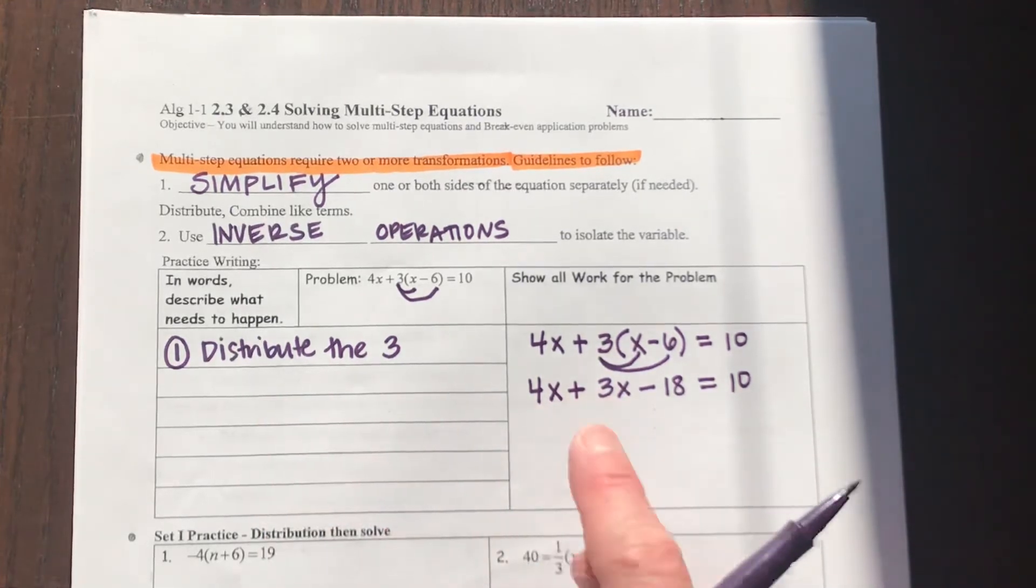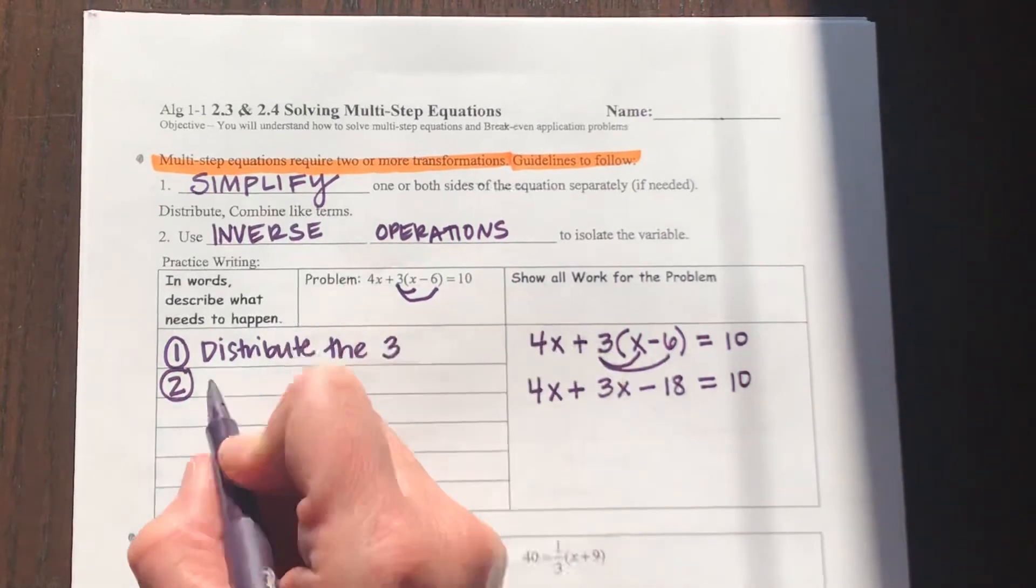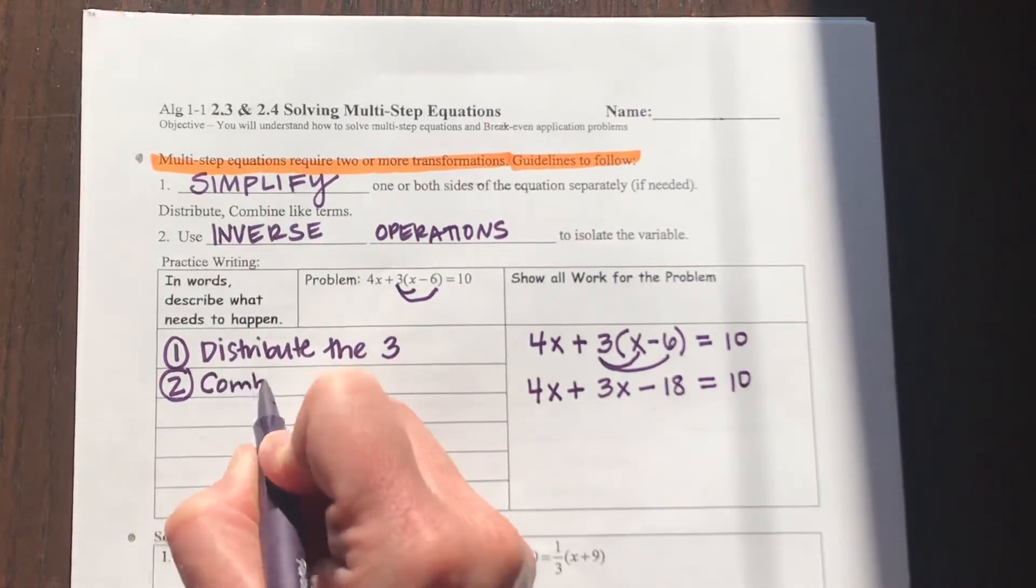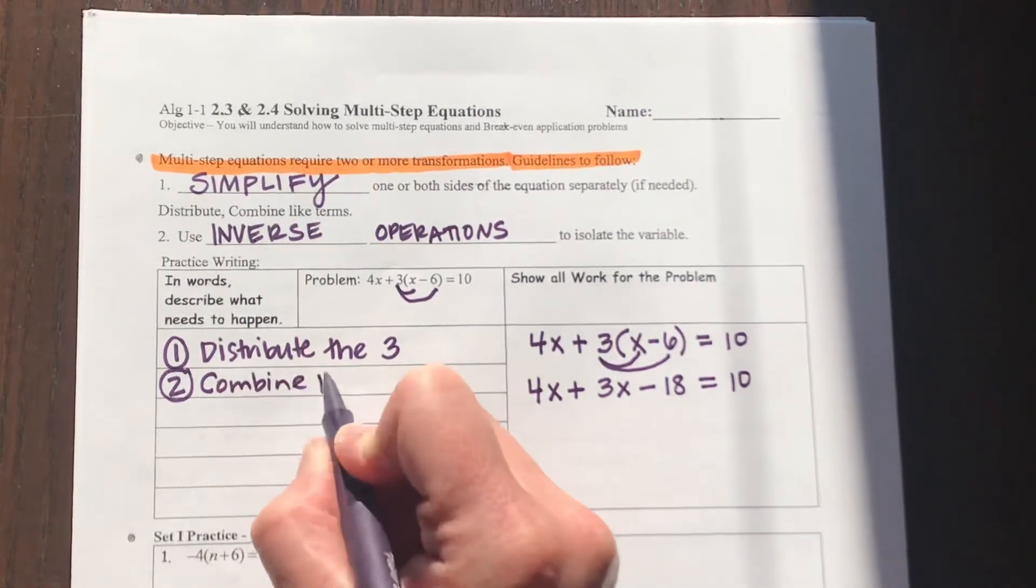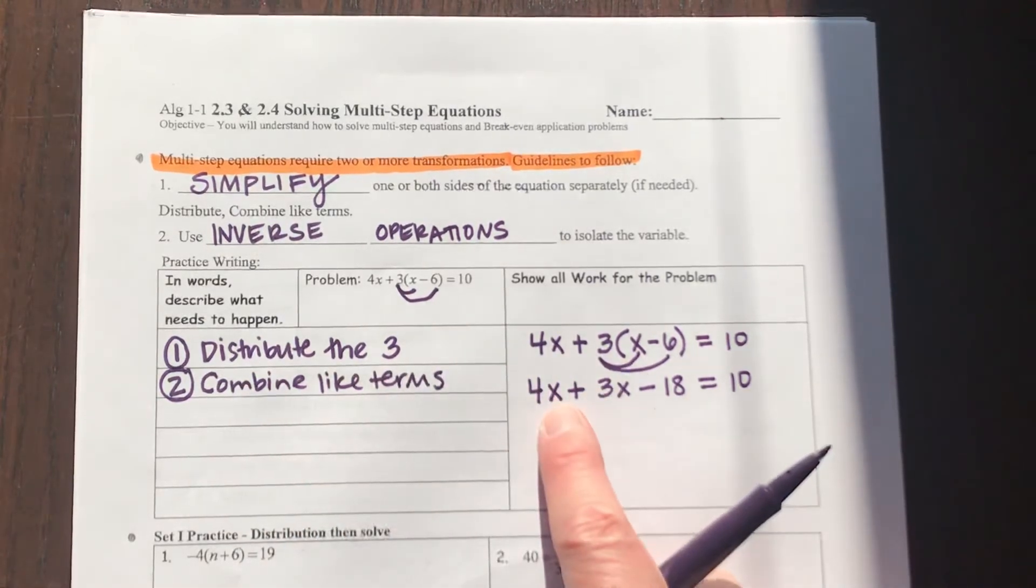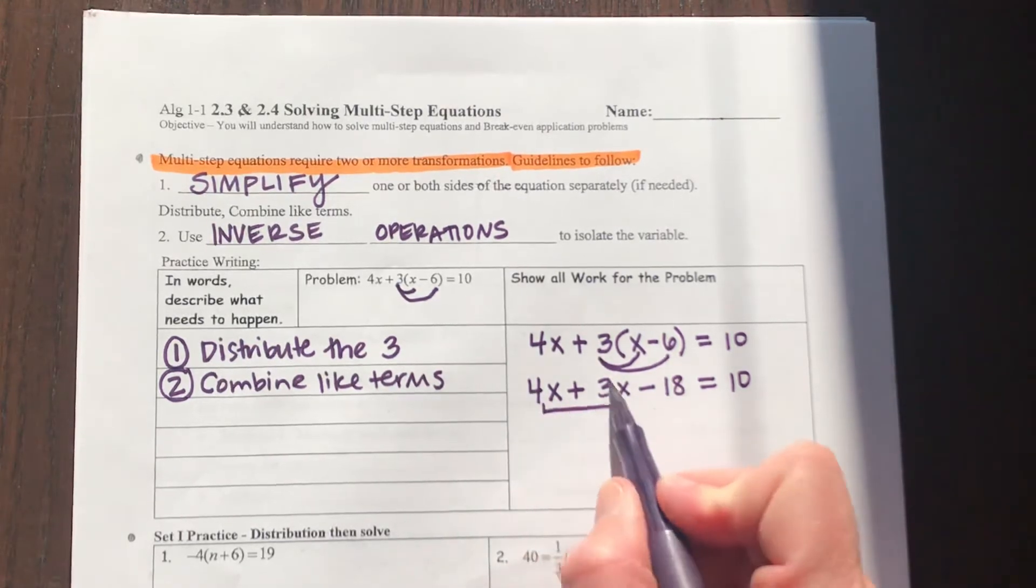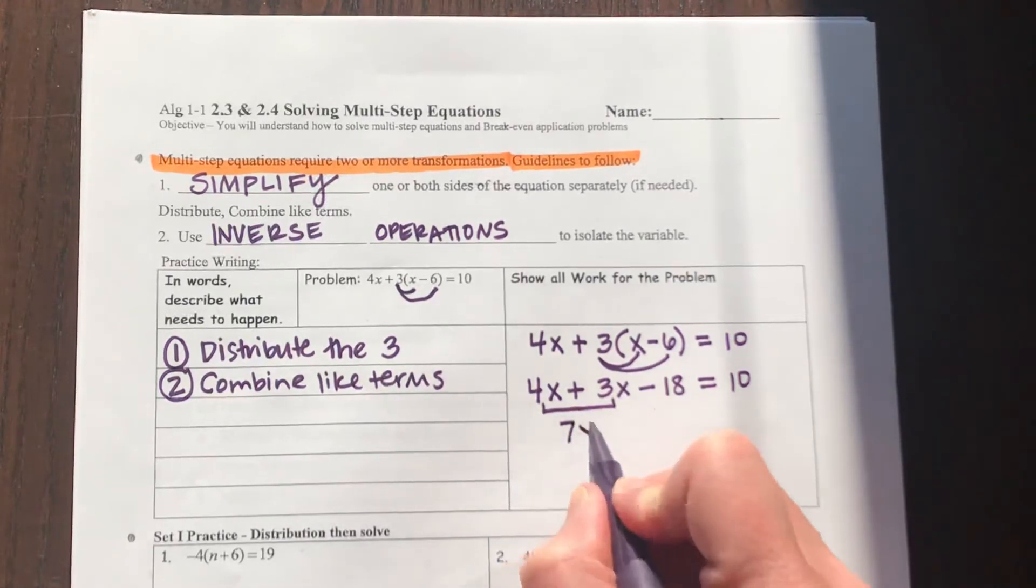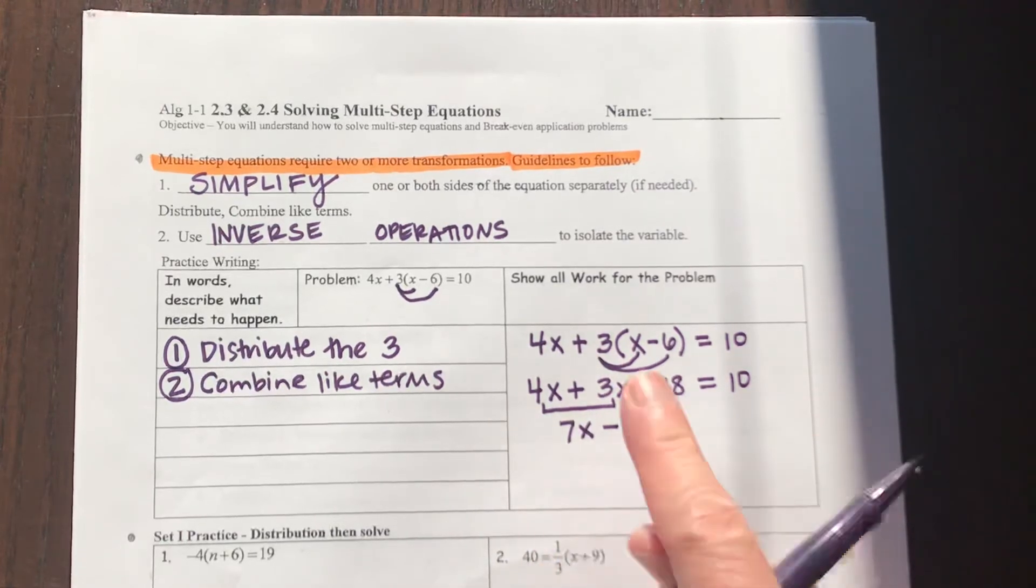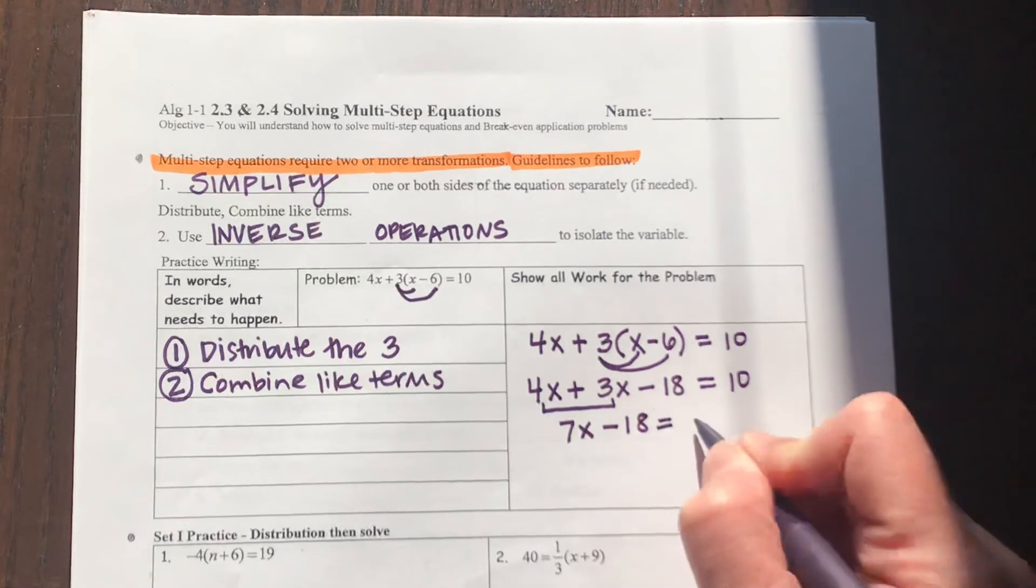My second step for solving my equation is going to be combine like terms. I'm going to add my 4x and my 3x together. 4 plus 3x makes 7x. My equation will then finish with minus 18, set equal to 10.